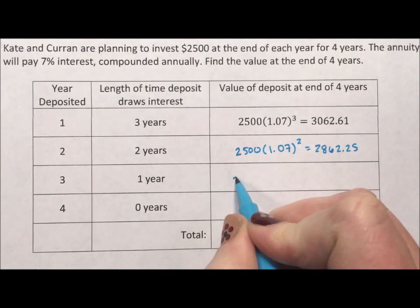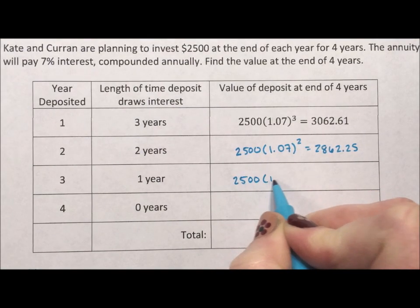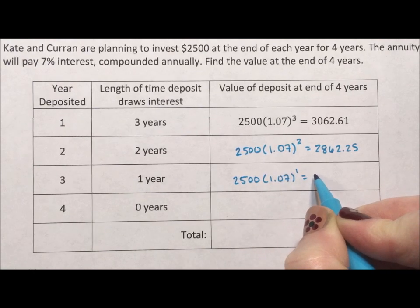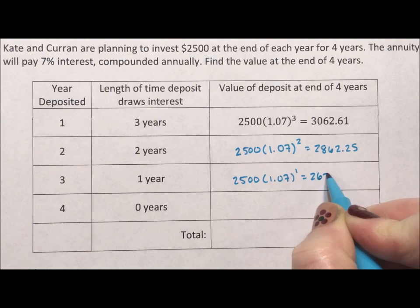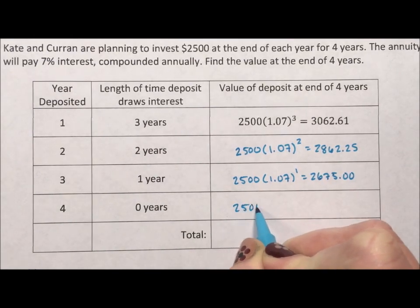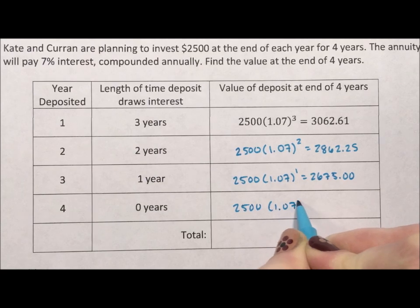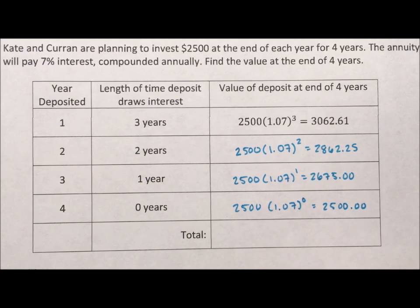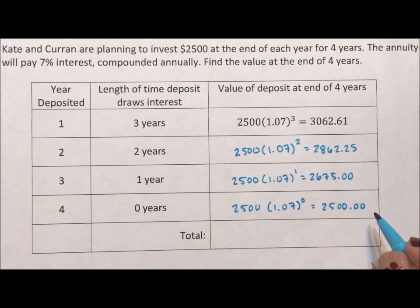And then the next year they do it again. This has one year to grow and it grows to $2,675. And then the last of it is not going to accrue interest. They're going to throw it in and that's how much money they have after four years. Well, on the fourth year.